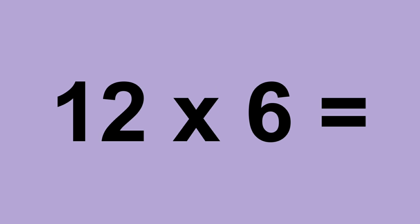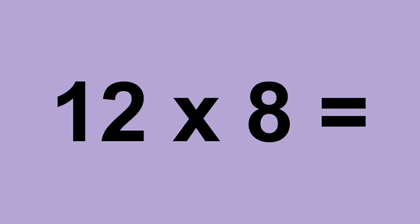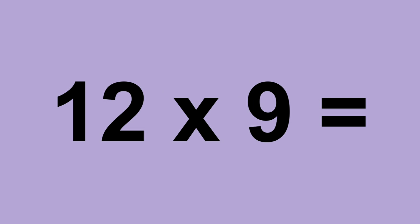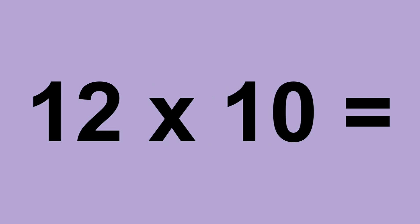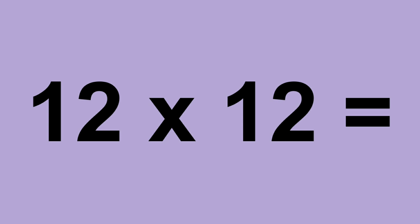Twelve times six equals seventy-two. Twelve times seven equals eighty-four. Twelve times eight equals ninety-six. Twelve times nine equals one hundred and eight. Twelve times ten equals one hundred and twenty. Twelve times eleven equals one hundred and thirty-two. Twelve times twelve equals one hundred and forty-four.